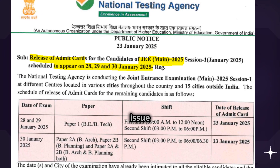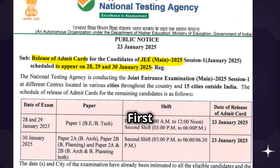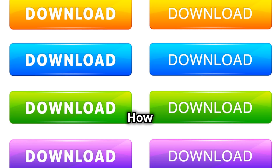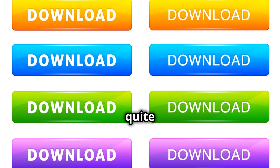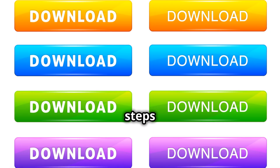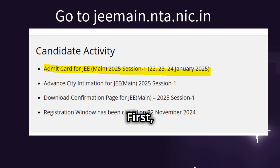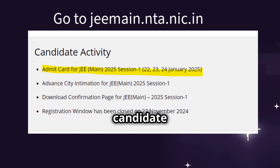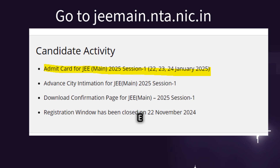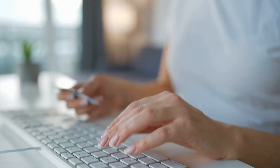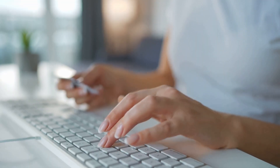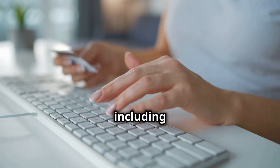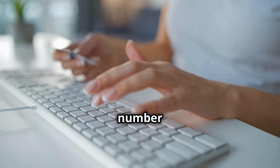Now coming to the issue with downloading the admit card — first, make sure you are following the steps correctly. How to download your admit card? It's quite simple. First, visit the official NTA website. Go to the Candidate Activity section, then click on the JEE Admit Card link. You'll be prompted to enter details as shown, including your application number and password.